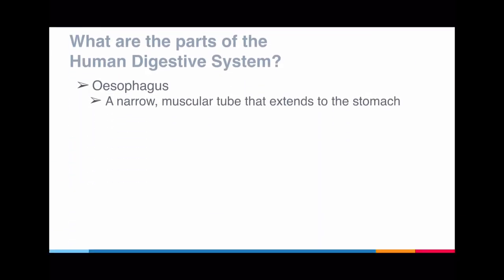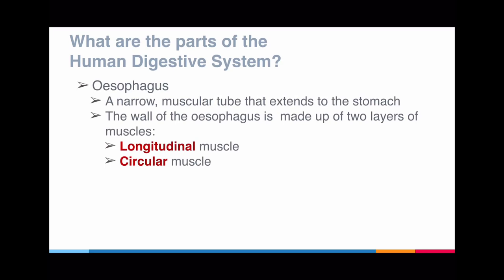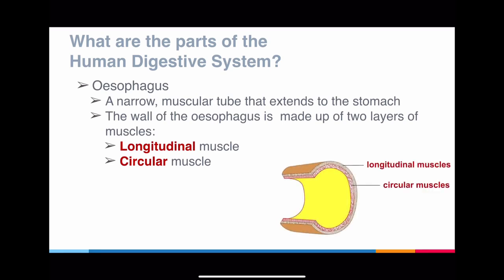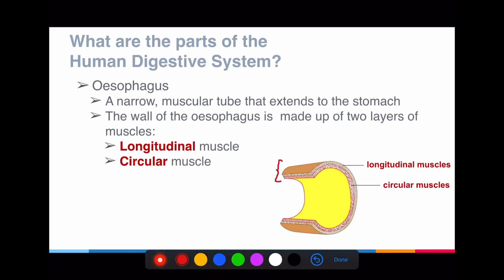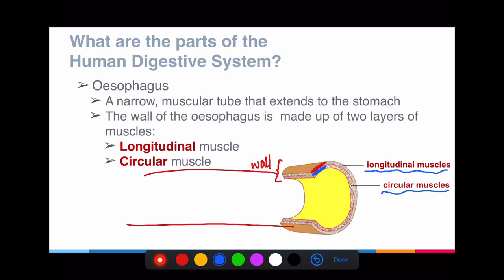The esophagus is a narrow muscular tube that extends to the stomach — it connects from the mouth area all the way to the stomach. Because it's a muscular tube, think of it like a pipe with a wall. If you examine the wall of the esophagus, you realize there are actually two layers of muscles — the longitudinal muscles and the circular muscles — surrounding the entire esophagus. We'll talk more about this when we discuss peristalsis.